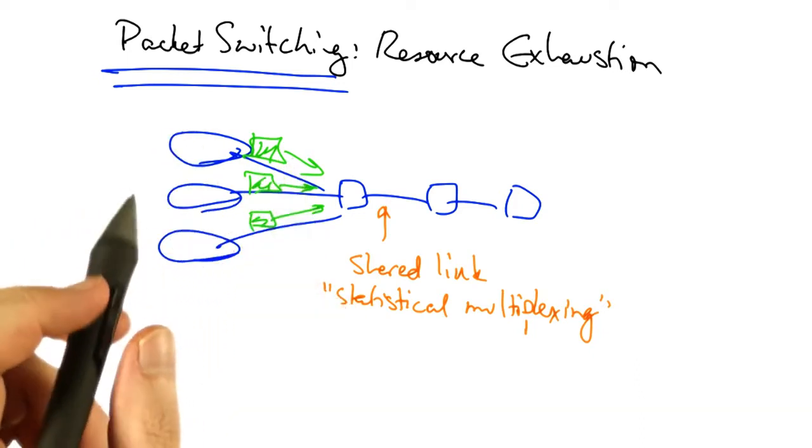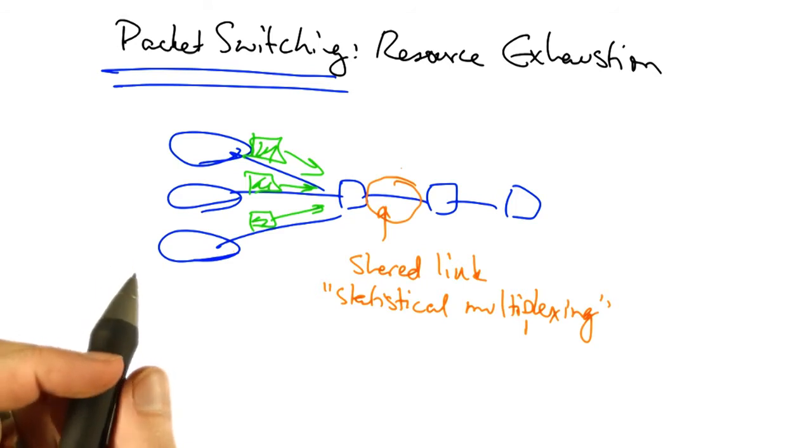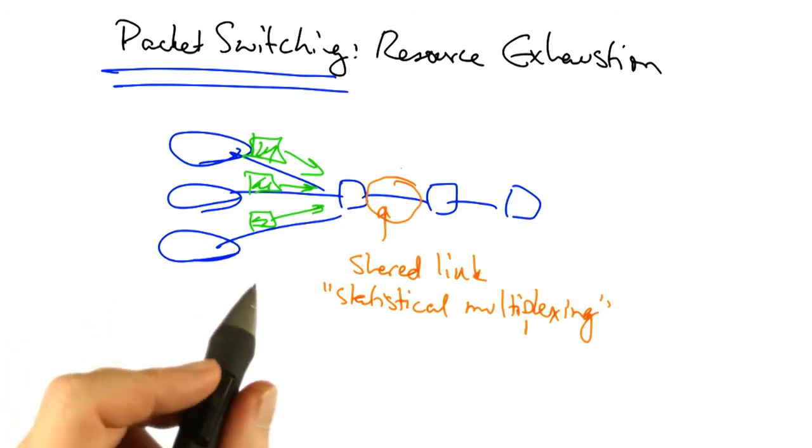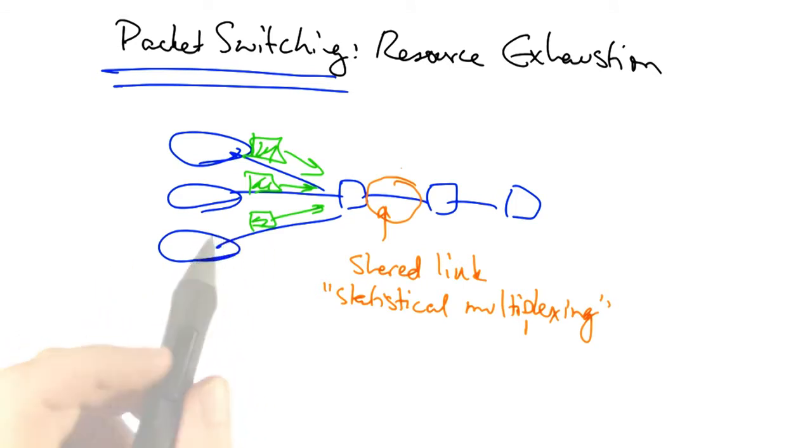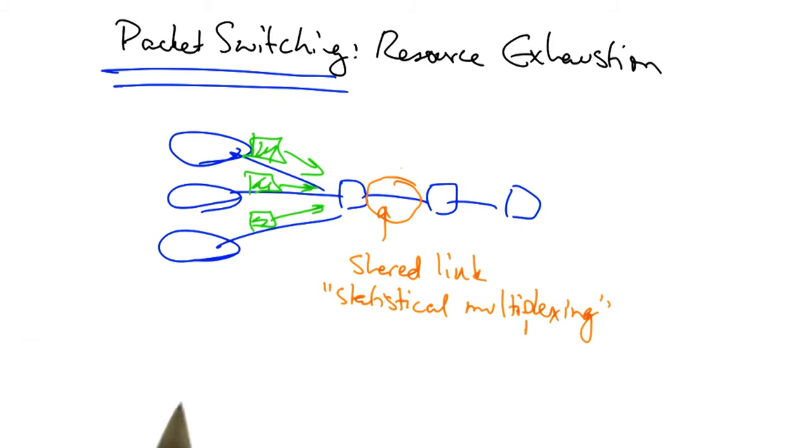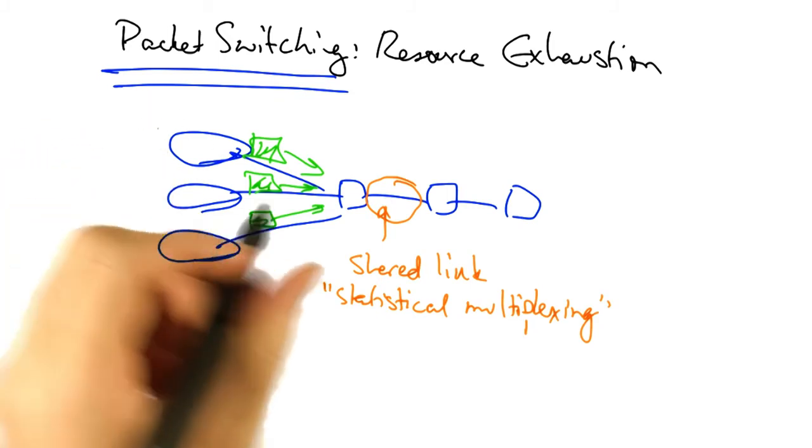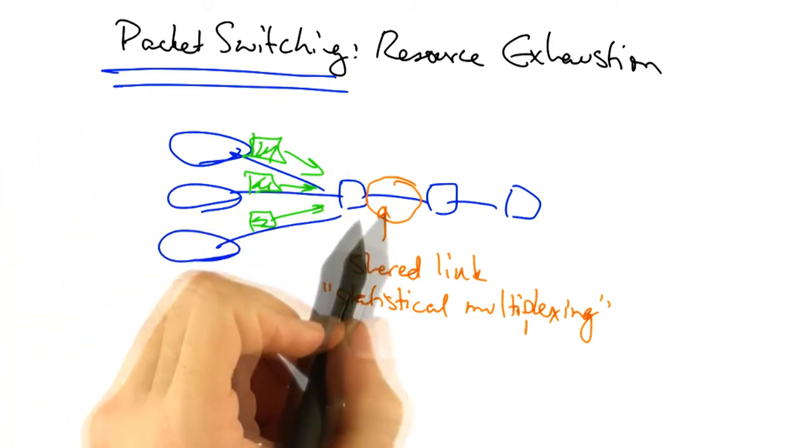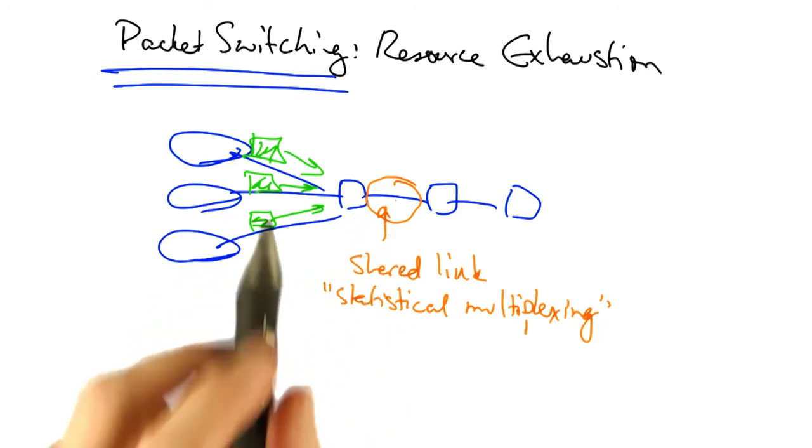While packet switch networks have their advantages, in particular, it makes it easy to achieve high utilization on a shared link, packet switch networks also have the drawback that a large number of senders can overload a network resource, such as a node or a link.